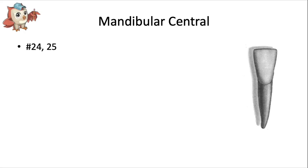Here we have the permanent mandibular central incisor, and it's the first succedaneous tooth to erupt into the arch, replacing the primary mandibular central incisors. Using the universal tooth numbering system, this would include tooth number 24 and 25.